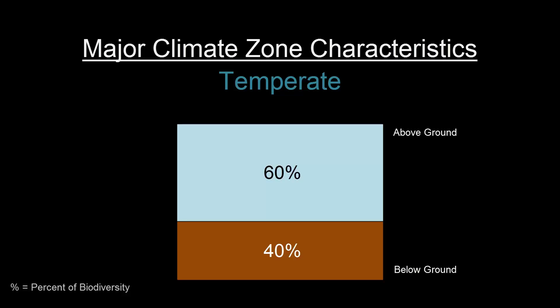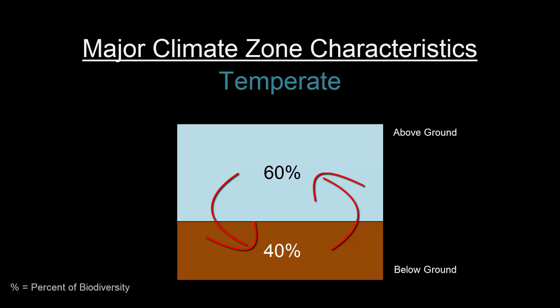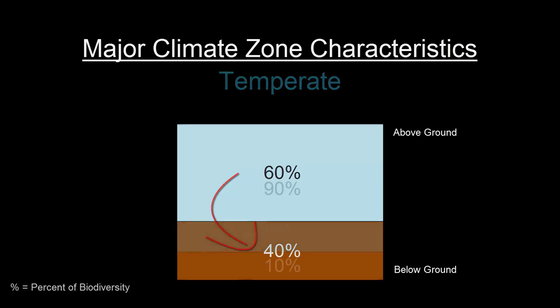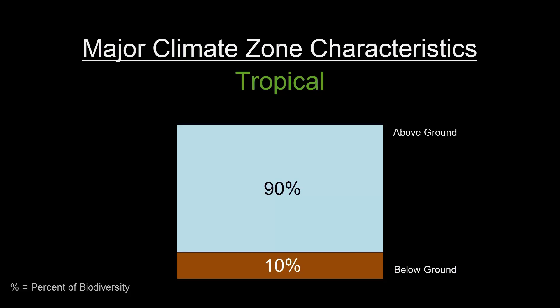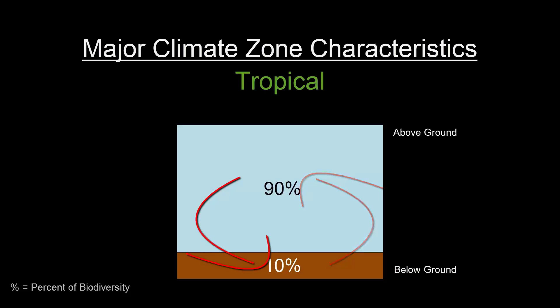We also spoke about the characteristics of these major climate zones, which included things like how much biodiversity is above the ground or below the ground depending on which zone we're in, and how that relates to our ability to design certain elements and features into a particular site. In the temperate area there's a specific start and stop point for certain cycles because we have times where we freeze and times where we warm up. In the tropical regions it's a constant cycle with very little slowing down, and because of that, certain elements that work in a temperate area will not work in the tropics and vice versa.